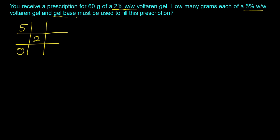And so the way it works is we want to find out what the number of parts of the gel base is going to be. So we will subtract the 2, which is the desired, from the 5. And that gives us 3. So this 3 actually is representing the number of parts of the gel base. So 3 parts gel base.